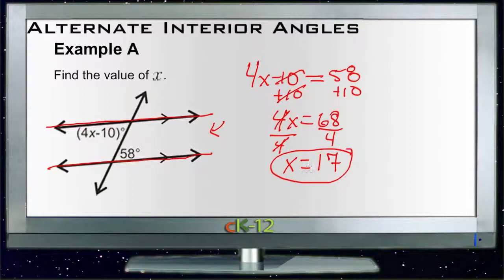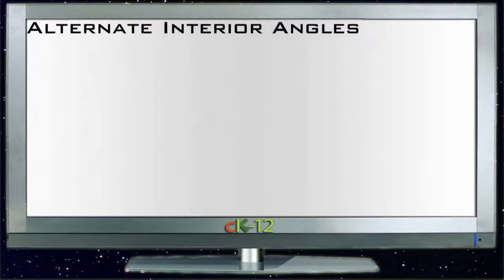And we can verify that because 4 times 17 is 68 minus 10, that's 58. And that would make our alternate interior angles equal. All right, let's take a look at example B.